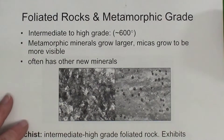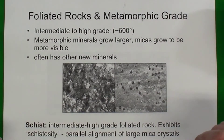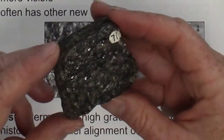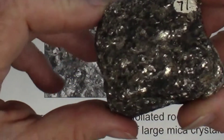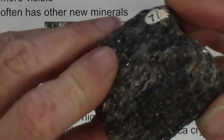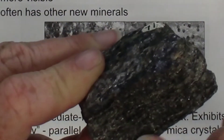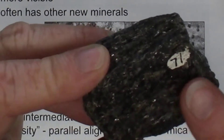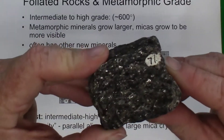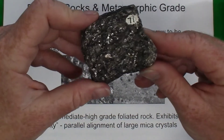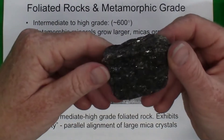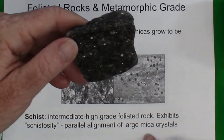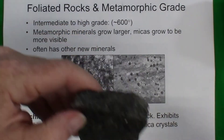Under higher grades of metamorphism — for example, intermediate to high grade starting at roughly 600 degrees Celsius — metamorphic minerals can grow larger. The micas that may have existed in the phyllite become larger in size and are very visible to the naked eye. You can see the parallel alignment of minerals on the side of the rock and also at the top surface due to the flat faces of the mica minerals. This rock is called schist — an intermediate to high grade foliated metamorphic rock. The specific type of foliation is called schistosity, which refers to the parallel alignment of large mica crystals giving the rock a very shiny appearance.